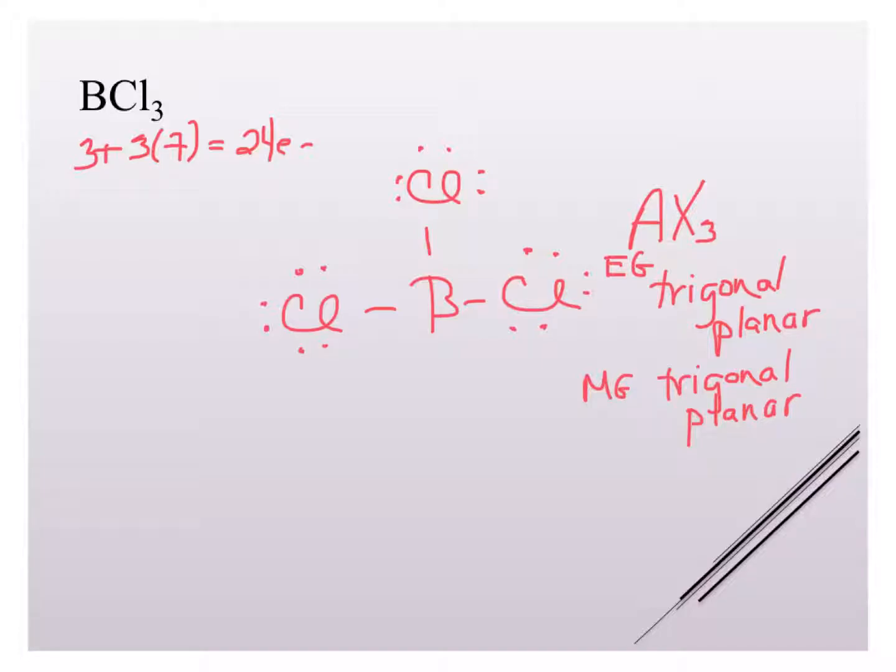If you were to have drawn this with a double bond, it still wouldn't have changed anything about your geometry. You still would have three groups around your central atom. It just means that one of them would have been a double bond. So that doesn't affect your geometry. It only affects the actual Lewis structure.